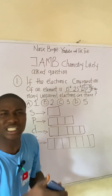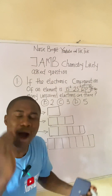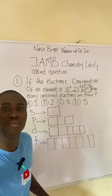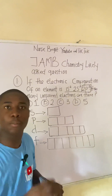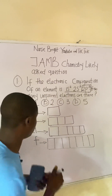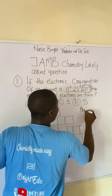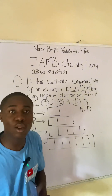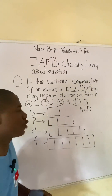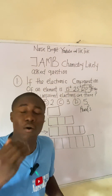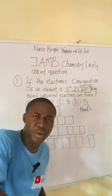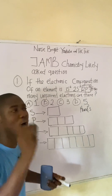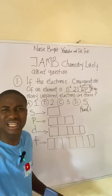Whenever we fill these electrons into the boxes, we do not just fill them anyhow — we fill them singly. This law I'm talking about was propounded by a scientist and is called Hund's rule of maximum multiplicity. This rule says we fill electrons singly before pairing takes place, because we are asked to get the number of unpaired electrons.